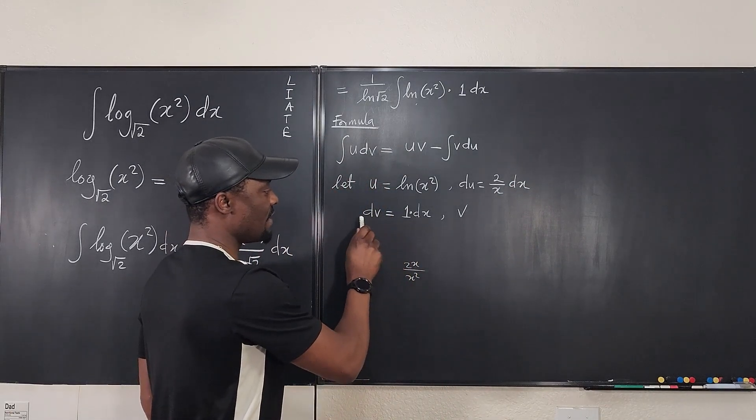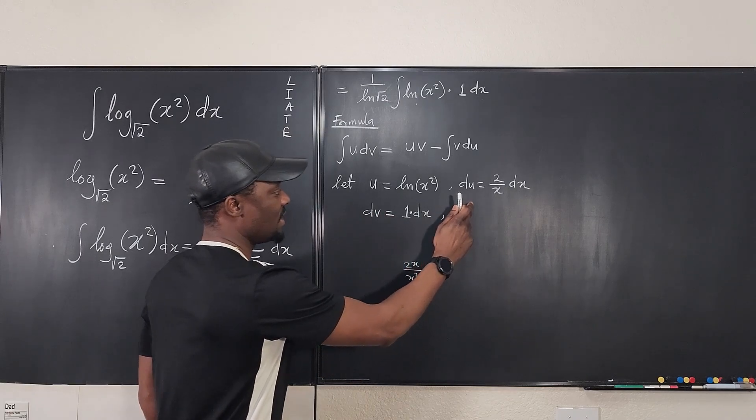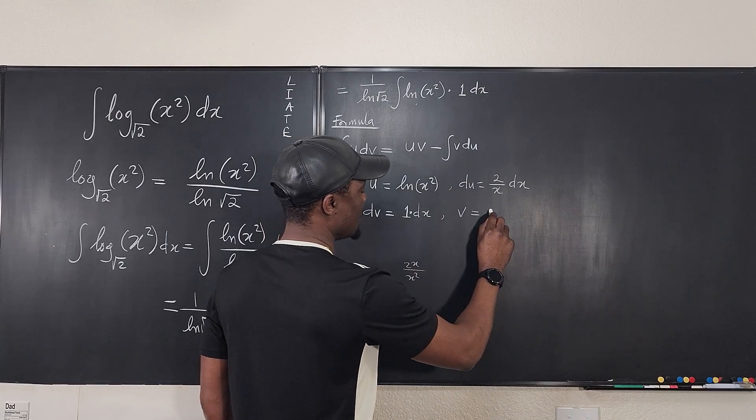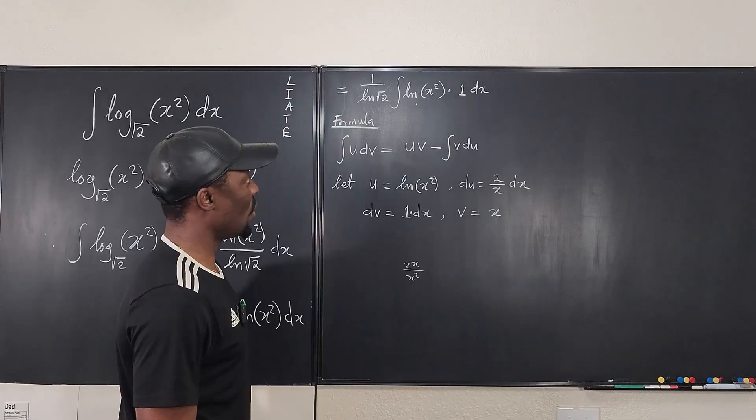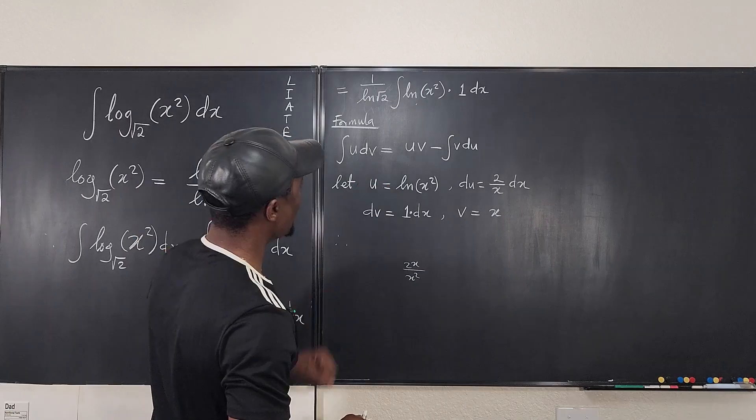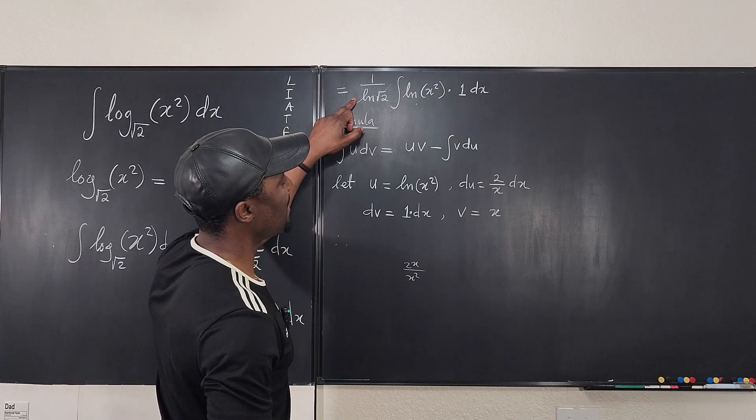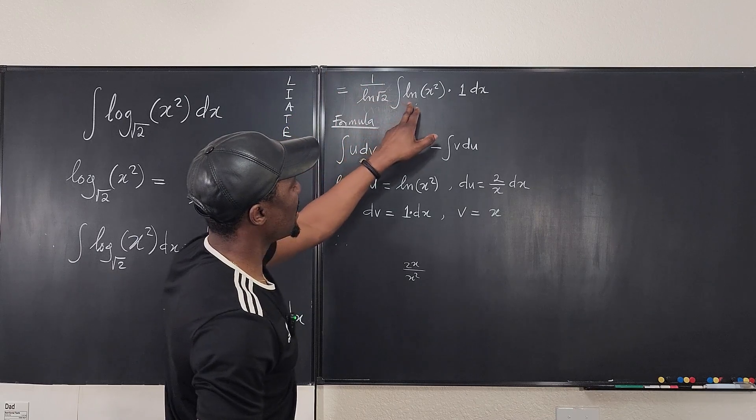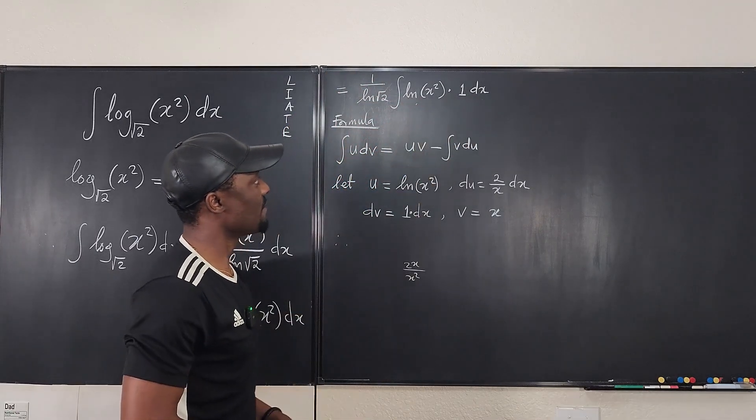Now if we integrate both of these to get our v, we're going to end up with, if we integrate this, we get v, integrate this, we're going to get just x. So let's go back and use our formula. You know what, I'm going to come back and write the final answer. I'm going to ignore this for now and just work on this part.